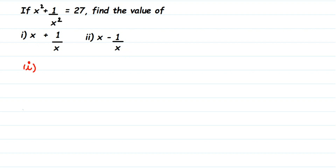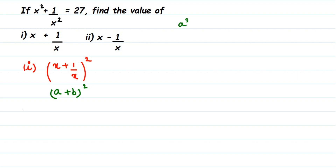We're going to square x + 1/x. Squaring means it becomes (x + 1/x) whole to the power 2. We cannot just open the bracket — we have to use the identity. This is like (a + b)², and the identity is a² + 2ab + b².